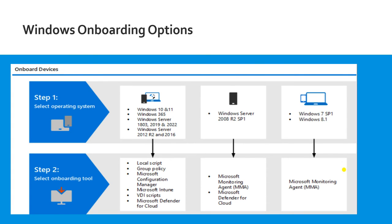Let's look at the Windows onboarding options specifically. For Windows 10, 11, Windows 365, Windows Server, and Windows Server R2, you can use Local Script or Group Policy to onboard your device. For older Windows Server versions, you need the Microsoft Monitoring Agent and Defender for Cloud. If you're still running Windows 7 or 8.1 in your infrastructure, you can use the Microsoft Monitoring Agent to enroll your device.